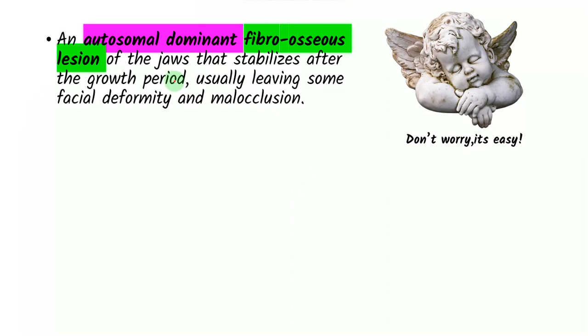So getting right into Cherubism, the first part of it, let's go over its complex definition. It tells us that this is an autosomal dominant fibro-osseous lesion of the jaws that stabilizes after the growth period, usually leaving some deformity and malocclusion. Going over the first part again, this is an autosomal dominant, that means it is a hereditary condition, and it is a fibro-osseous lesion.